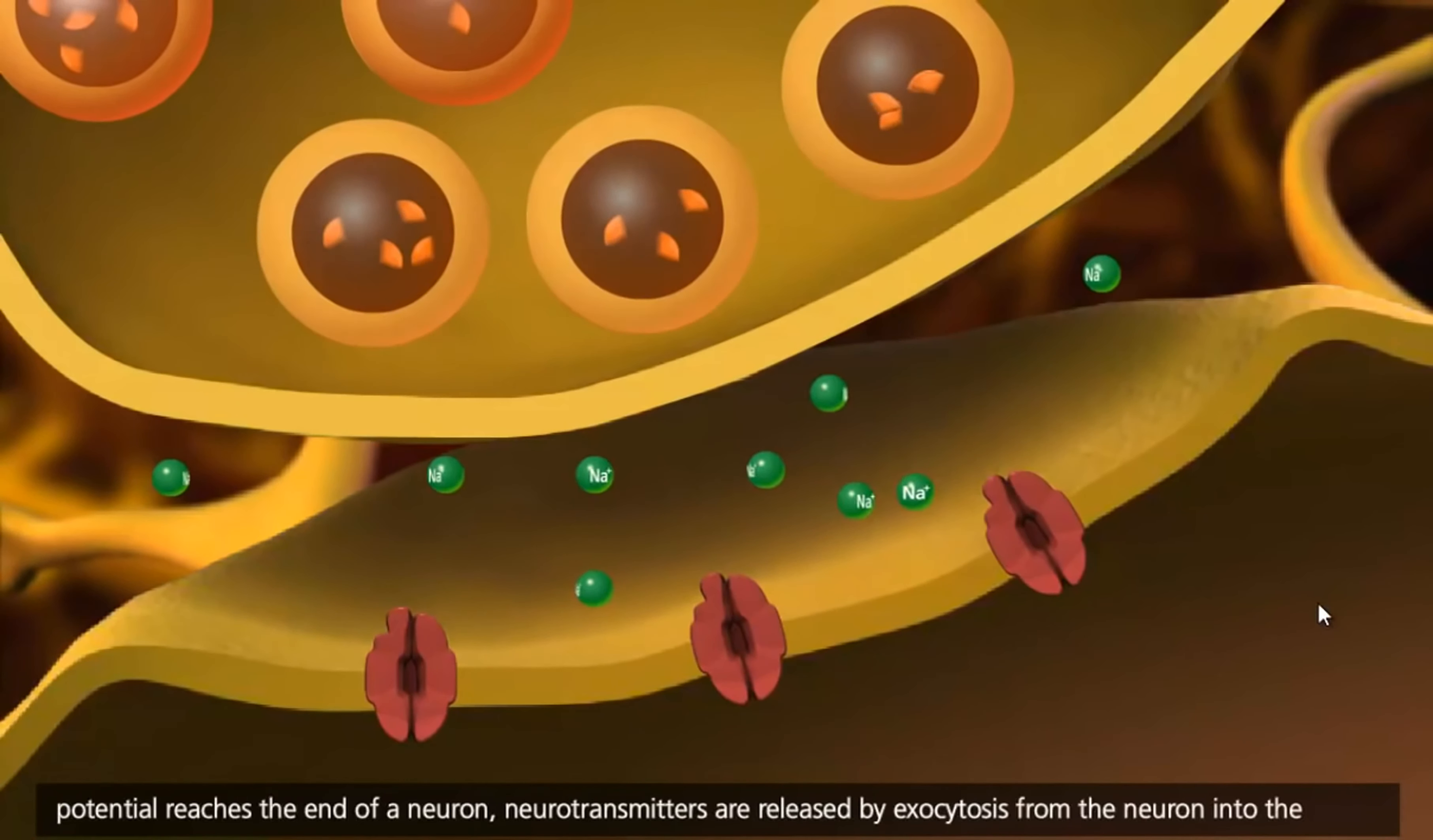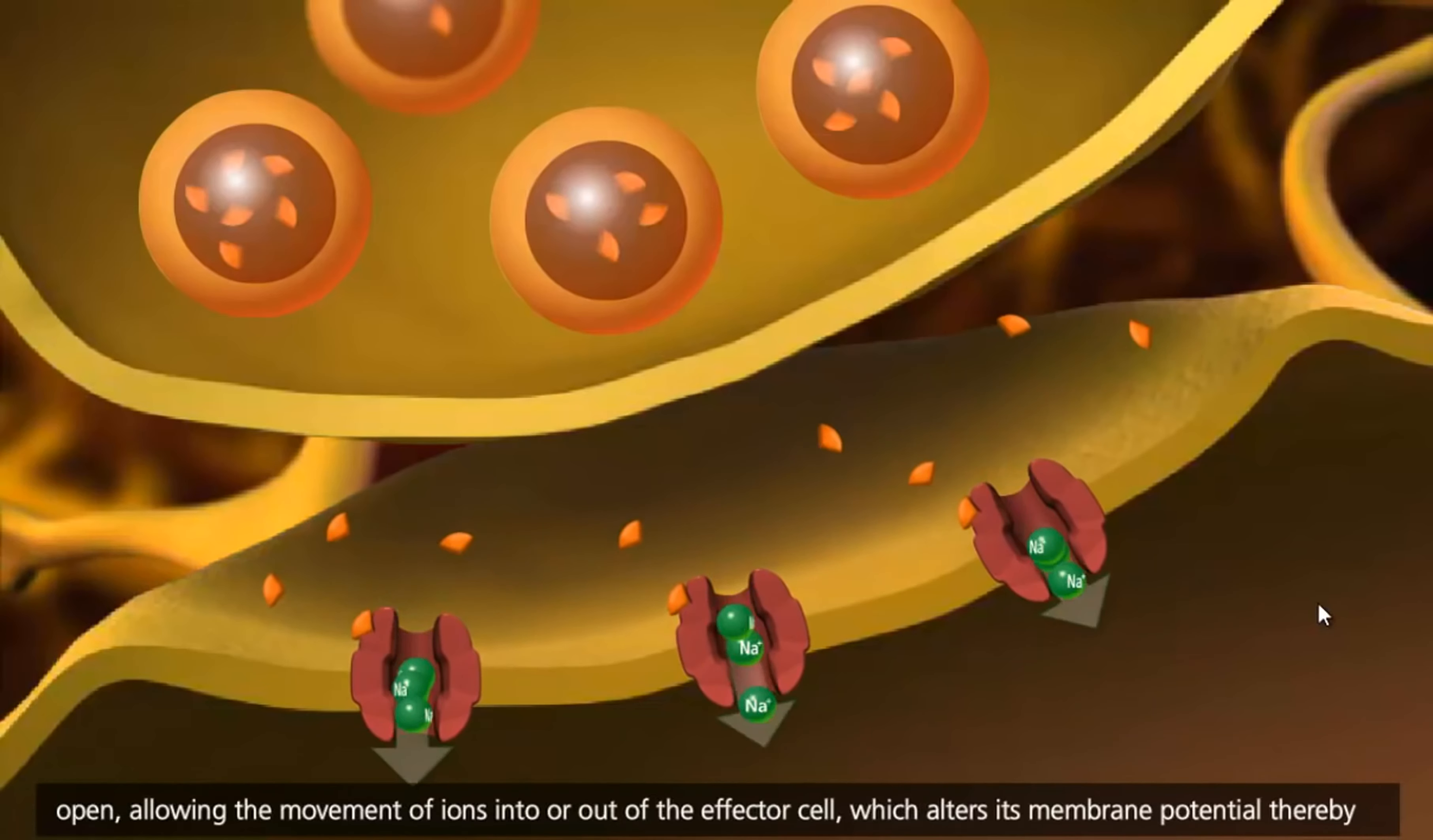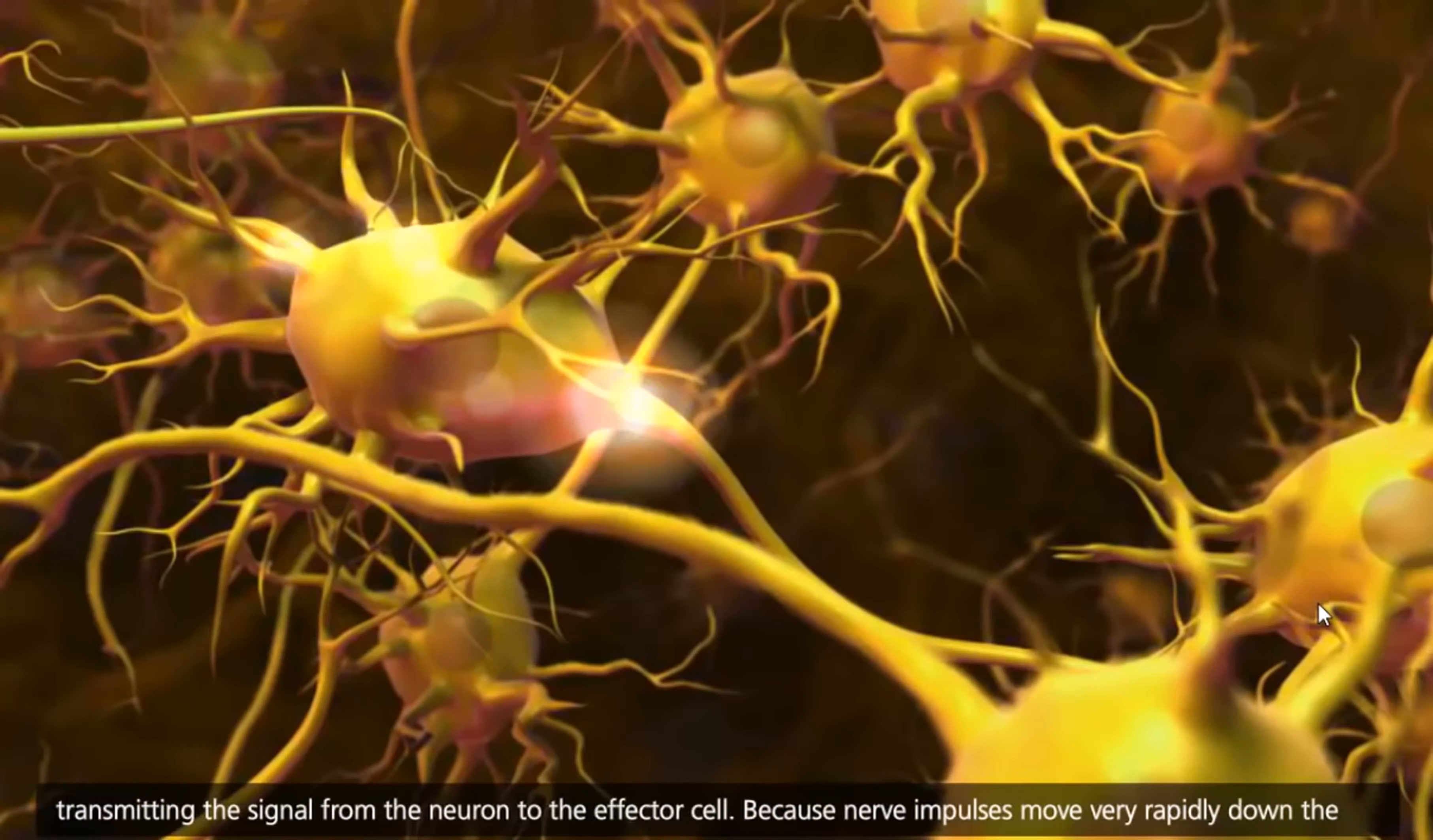When an action potential reaches the end of a neuron, neurotransmitters are released by exocytosis from the neuron into the synaptic cleft. Neurotransmitters bind to the adjacent cell at receptor sites attached to ion channels. The channels open, allowing the movement of ions into or out of the effector cell, which alters its membrane potential, thereby transmitting the signal from the neuron to the effector cell.